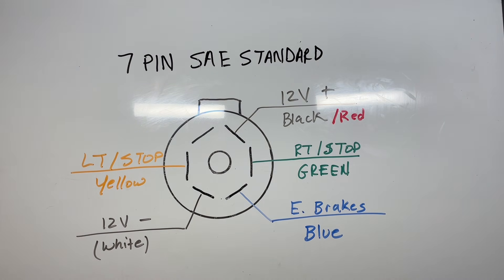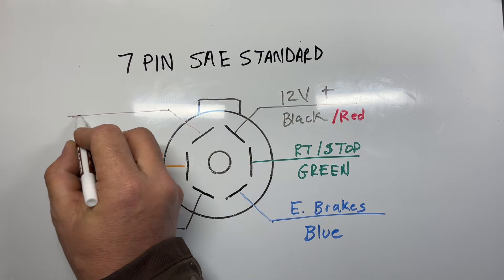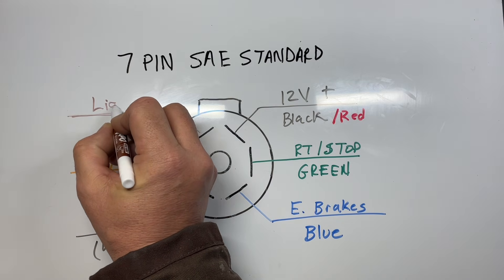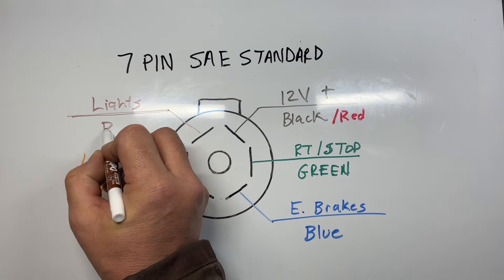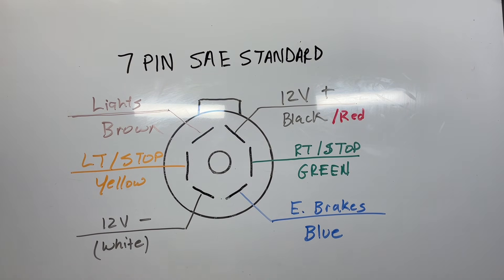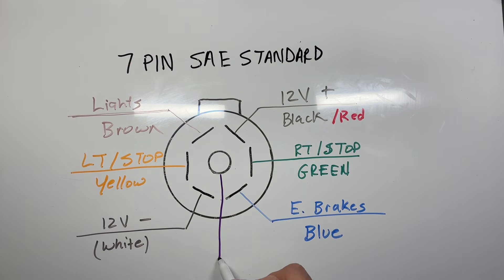Then we have the running lights, and these are generally in brown for the SAE standard. And then finally, the last one is going to be your center pin. Your center pin for SAE standard is usually a purple wire, and this is your reverse lights.